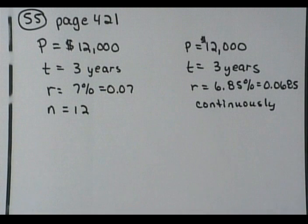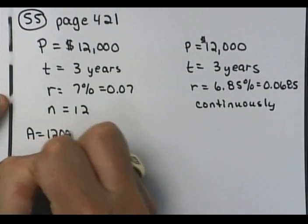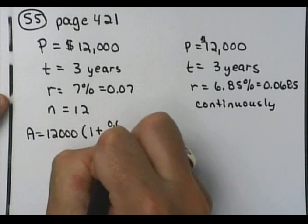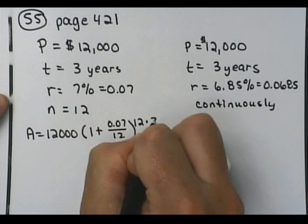Alright, so we need to calculate both of these, right? So for the first one here, I'm going to use 12,000 times (1 plus 0.07 over 12) raised to the 12 times 3.